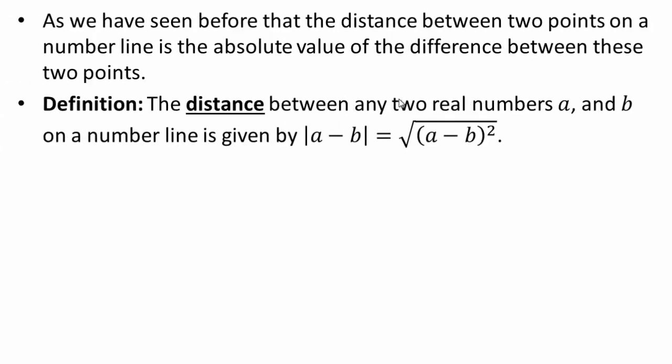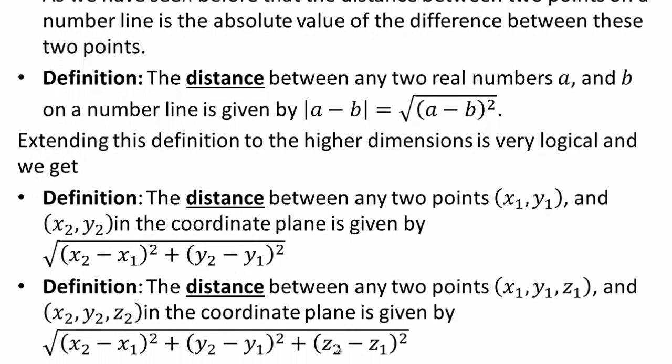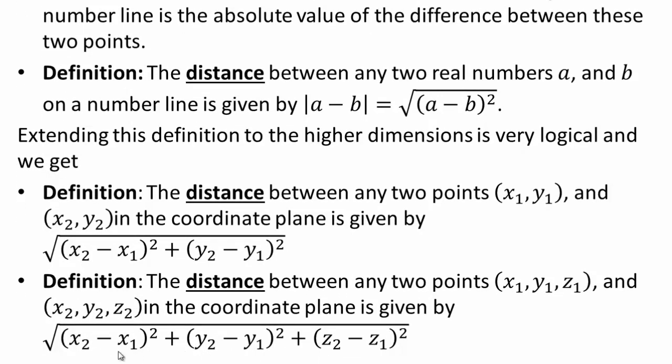This is what we have seen. Distance between two real numbers on the number line is given by that. Distance between two points in the coordinate plane is given by that. Three-dimensional space distance will be given by that. There is a field of mathematics called real analysis and also a field called topology in which people study different ways of working with distances. They're called metrics and they satisfy certain properties in order for them to be called distance or metric.